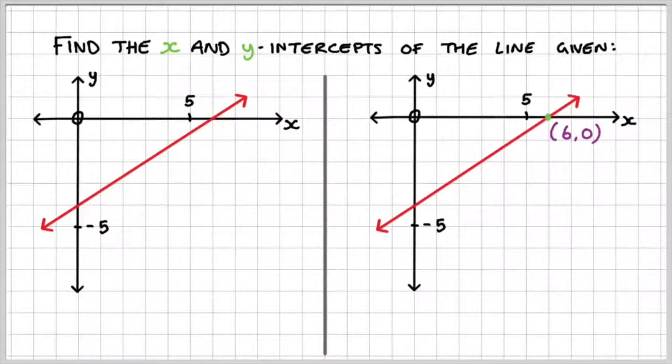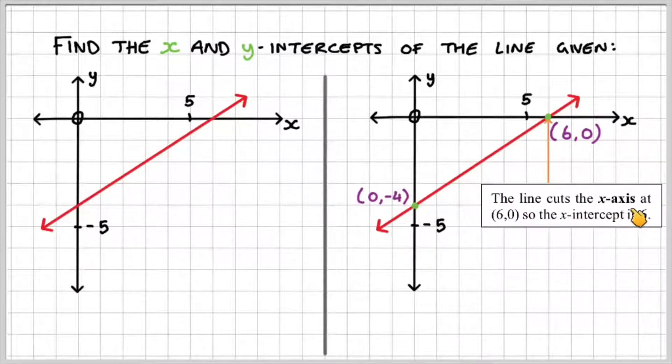So let's find the coordinates for this point here and the coordinates for this point here. The line cuts the x-axis at (6,0), so the x-intercept is 6. That's the point where it cuts the x-axis.